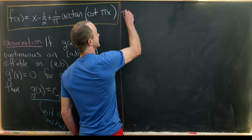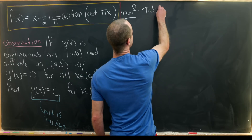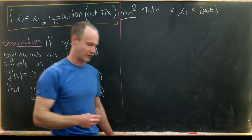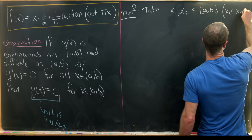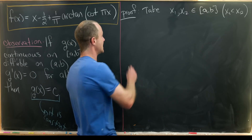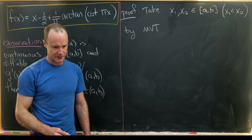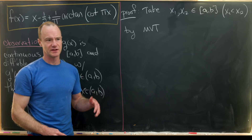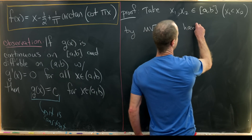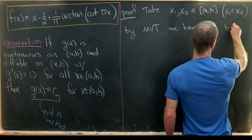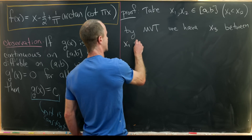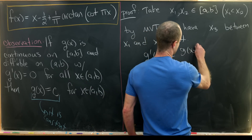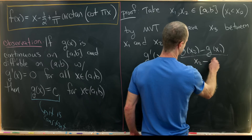So let's see how the proof of this goes. Let's take x1 and x2 from our interval [a, b], chosen freely except for the condition that x1 is less than x2. Then by the mean value theorem — which says there's always a place where the instantaneous rate of change equals the average rate of change — we have some number x3 between x1 and x2, such that g prime of x3 equals g of x2 minus g of x1, over x2 minus x1.